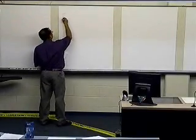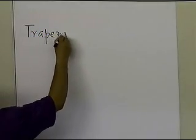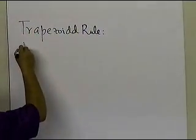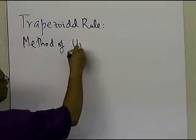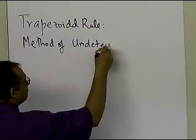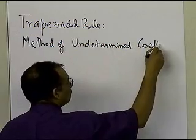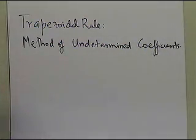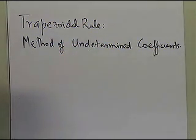In this segment, we're going to take the trapezoidal rule and derive it from the method of undetermined coefficients. This is just one of the ways to derive the trapezoidal rule, and the reason we're discussing it here is because the method of undetermined coefficients becomes the basis for the Gauss quadrature rule.